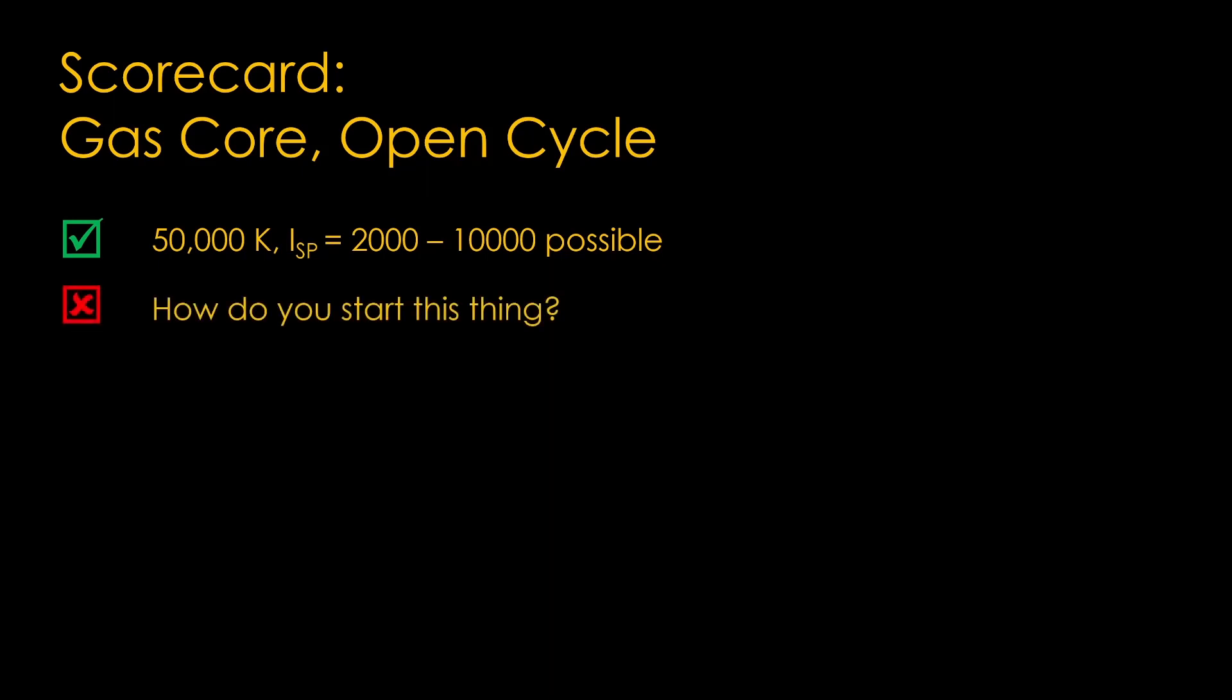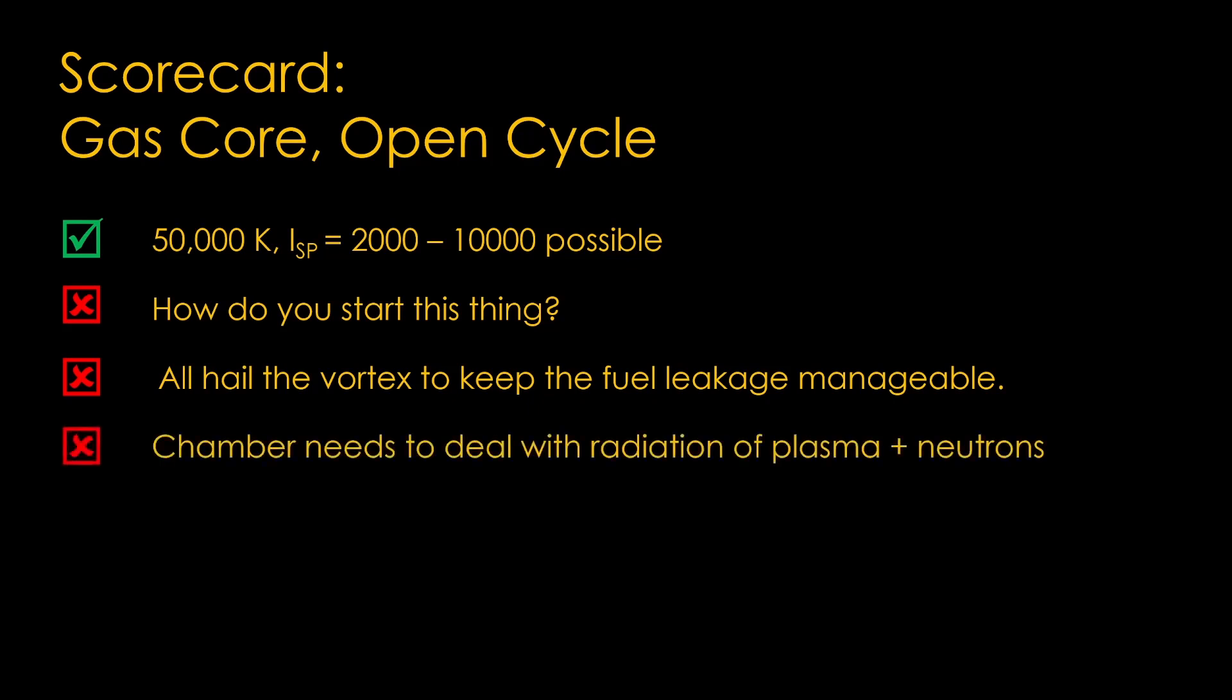On the negative side, how do you create uranium plasma that starts the thing? There's a lot of dependence on the power of the vortex to keep uranium from exiting through the nozzle. The chamber needs to deal with a large amount of radiation and neutrons.